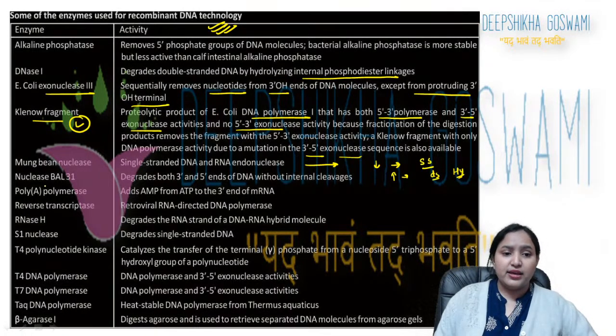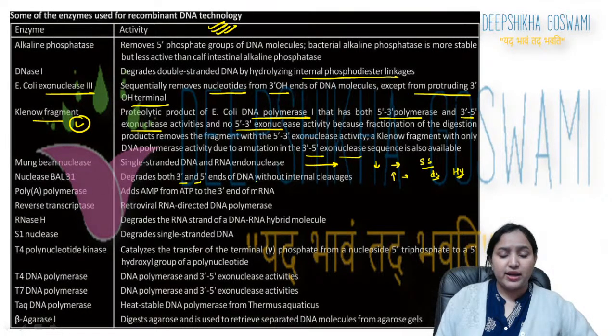Exonuclease degrades both 3'→5' ends of DNA without internal cleavage.